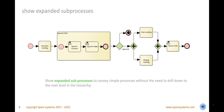Create expressive diagrams and show expanded sub-processes to convey uninterrupted flow, without the need to drill down to the next level in the hierarchy. Color the sub-process to make the diagram more engaging and draw attention to the fact that you are showing two levels of the hierarchy on a diagram.